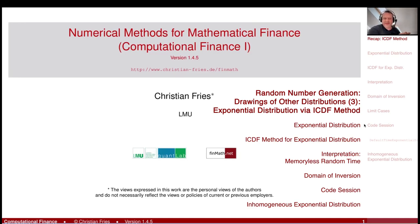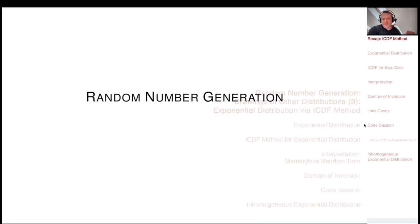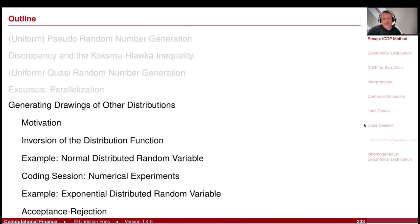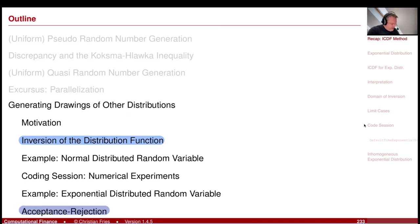Welcome to Numerical Methods. We are still in our section on random number generation, but we have now started talking about generating drawings from other distributions. I introduced the method of inversion of the distribution function. We will also discuss acceptance-rejection below. Inversion of the distribution function is my favorite method because it is so robust and usually very fast. Acceptance-rejection is also interesting because it links to weighted Monte Carlo and provides a nice motivation for that method.